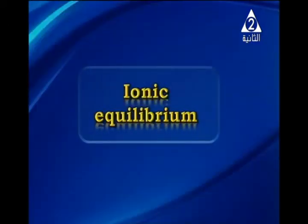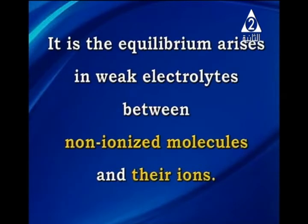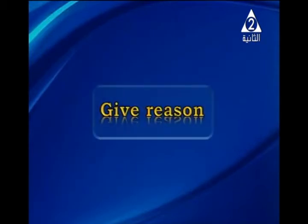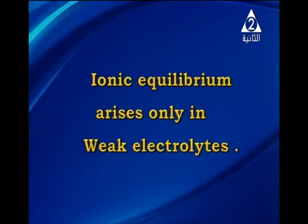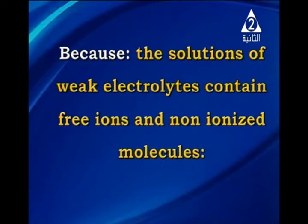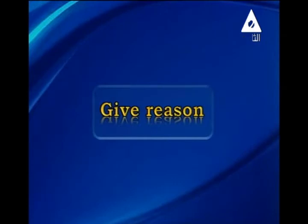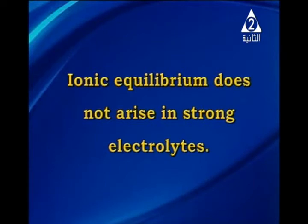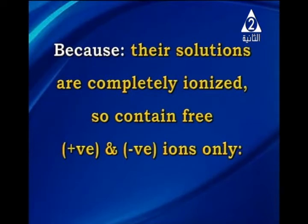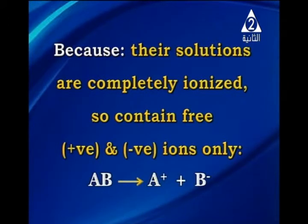Ionic equilibrium is the equilibrium that arises in weak electrolytes between non-ionized molecules and their ions. Ionic equilibrium arises only in weak electrolytes because the solution of a weak electrolyte contains both free ions and non-ionized molecules. Ionic equilibrium does not arise in strong electrolytes because their solutions are completely ionized, containing only free positive and negative ions — all molecules are converted to ions.